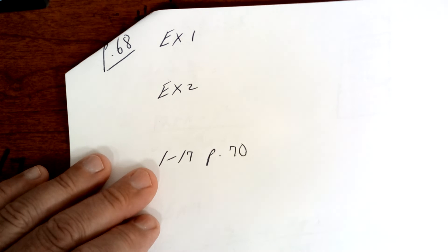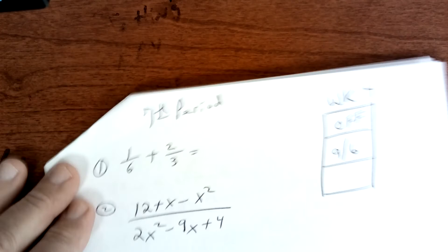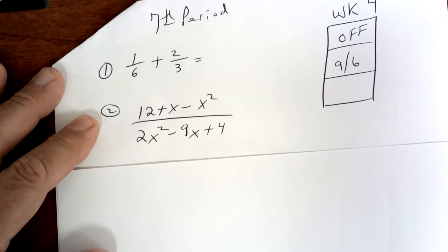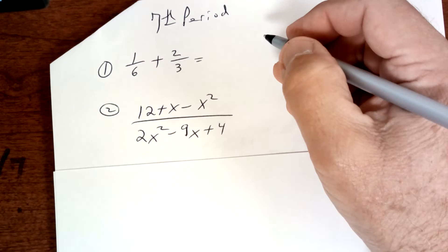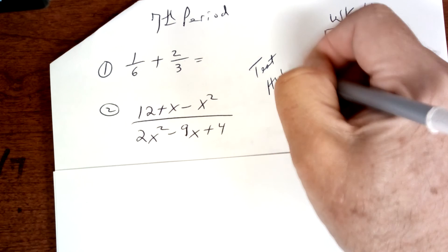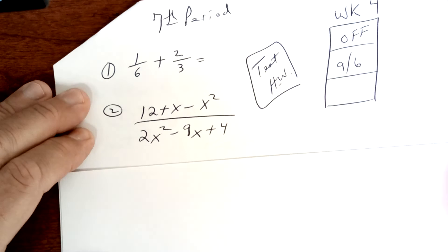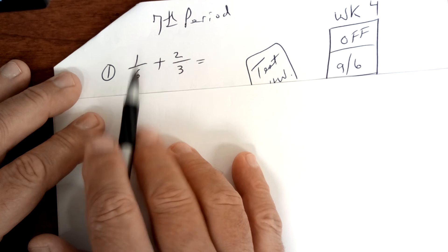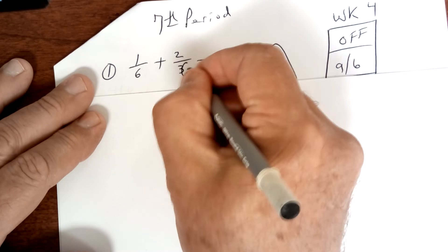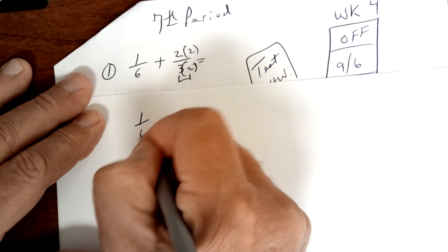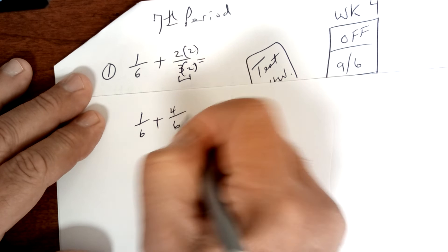Let's turn our attention now to 7th period. When you add or subtract fractions — by the way, if you still have to take the test it's open tonight, so get the test and homework in. You need a least common denominator. The LCD here is 6 because 3 goes into 6. So you multiply to make a 6 in the denominator, giving you 1 over 6 plus 4 over 6 equals 5 over 6.